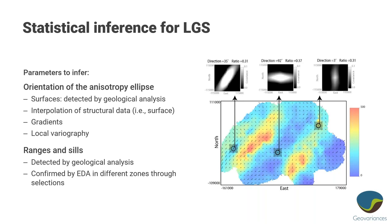Local geostatistics is actually a little more general than just orientations — you can also change properties of your variogram model, such as ranges and sills. As for how to set those factors, that's more complicated. We do have a tool coming out in version 2023.08 that uses cross-validation to determine how variogram model parameters should vary at different parts of your domain based on surrounding samples. However, that's not too commonly applied, so I'm going to focus my demonstration just on orientations and ellipsoids.